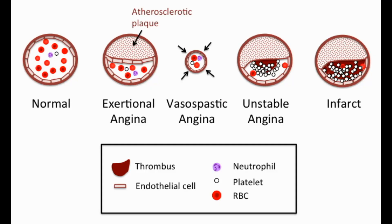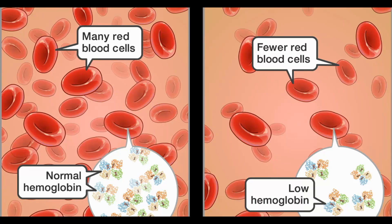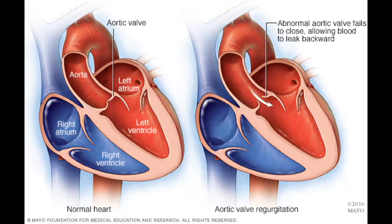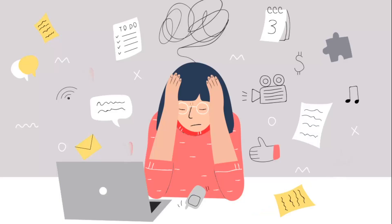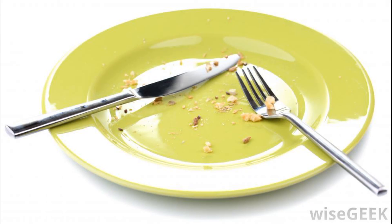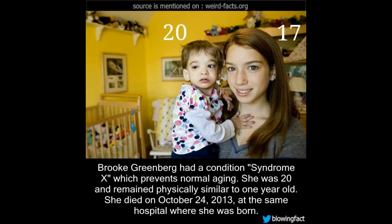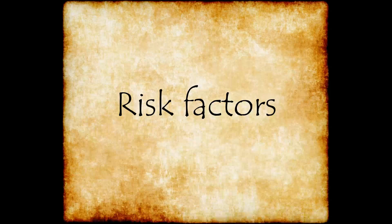Angina is due to a transient decrease in blood supply to the myocardium. It may be due to fixed coronary stenosis, clot superimposed along with coronary stenosis, or coronary vasospasm. Angina can also occur when myocardial oxygen demand increases despite normal coronary arteries — for example, in anemia, hyperthyroidism, aortic regurgitation, over-exercise, tachycardia, left ventricular hypertrophy, mental and emotional stress, post-prandial state, exposure to cold, and in a condition known as Syndrome X.